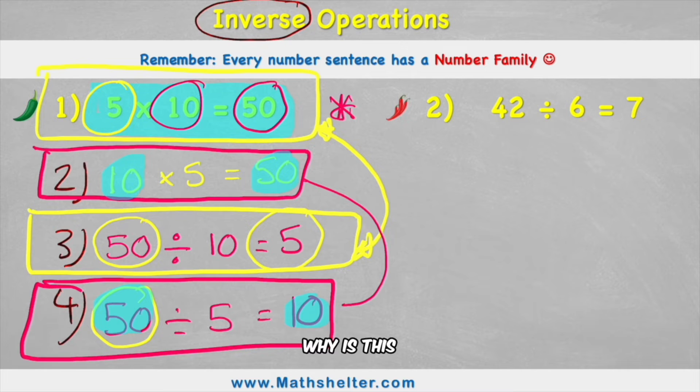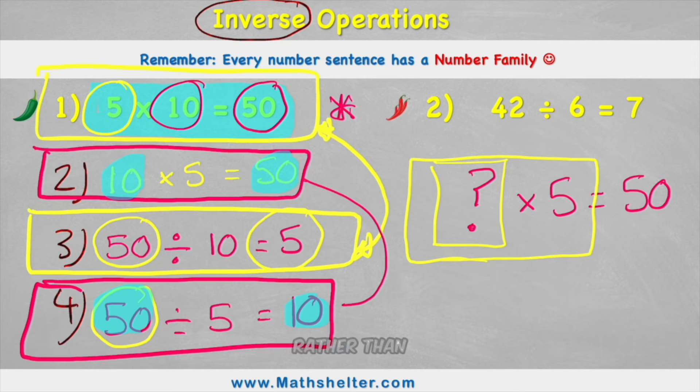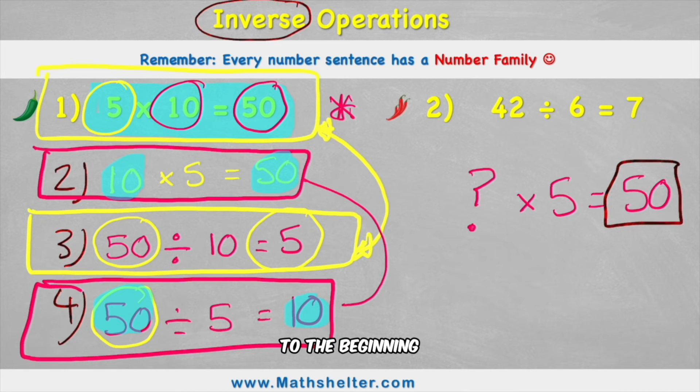But again, why is this helpful? Well, sometimes you will see a question like this. It will say something times 5 equals 50. And we call a question like this a missing number question, because we have a missing number in the question part of the question rather than the answer. But now we know about inverse operations, we know that we can just bring this 50 to the beginning of my sentence, invert my operation, which was multiplication, we know the opposite is division.